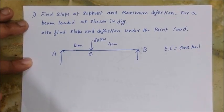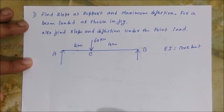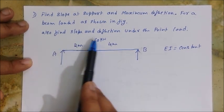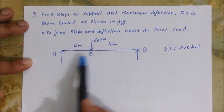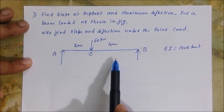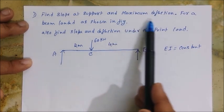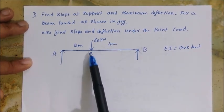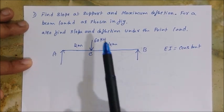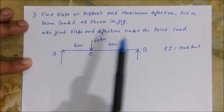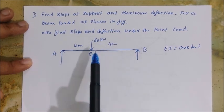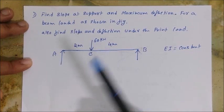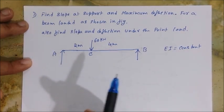Find the slope at support and maximum deflection for a beam loaded as shown. Also find the slope and deflection under the point load. This is a different problem because it is not symmetrical, so you cannot say the maximum deflection occurs at the center of the span. Before finding the maximum deflection, you first have to find where it will occur, then calculate the deflection.